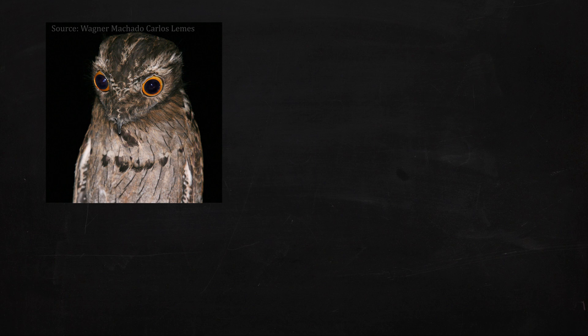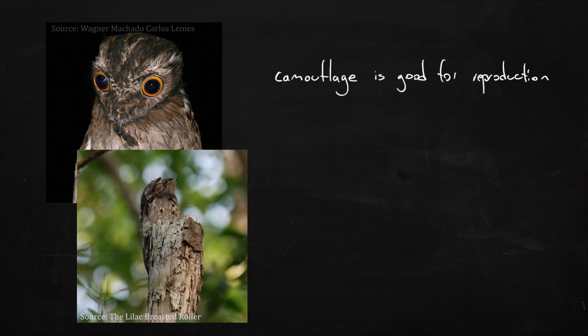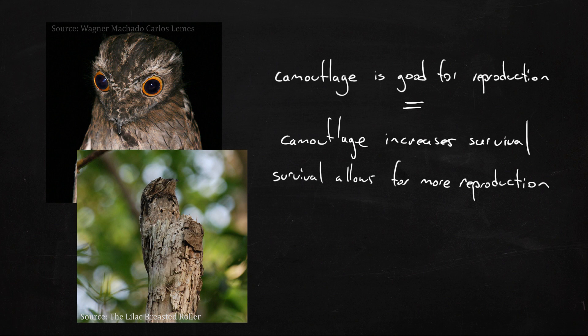Evolutionary theory people often talk about things only in terms of reproduction. Like, camouflage is good because it helps reproduction. I think because reproduction is the more important thing, it's sort of a shorthand for saying camouflage helps survival so that the organism can go off and reproduce more.